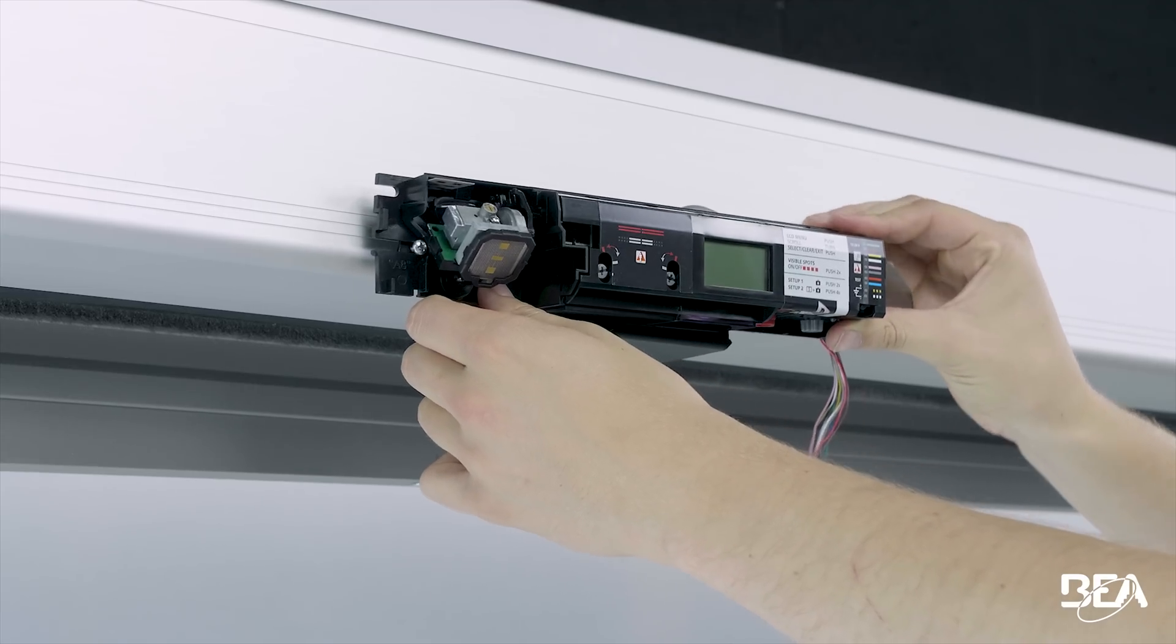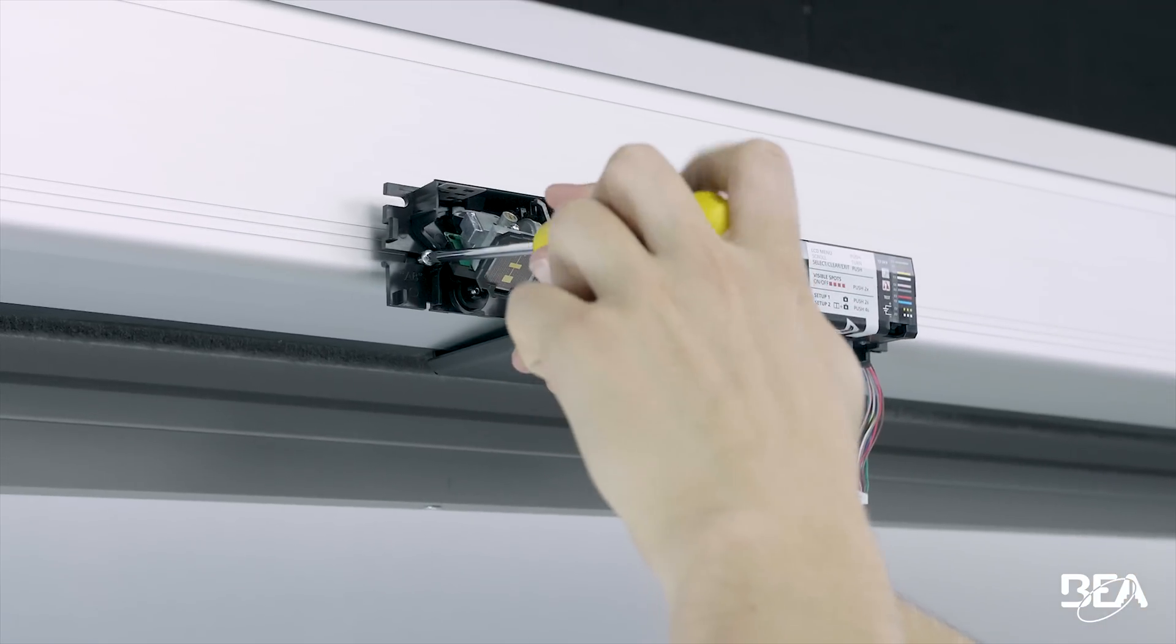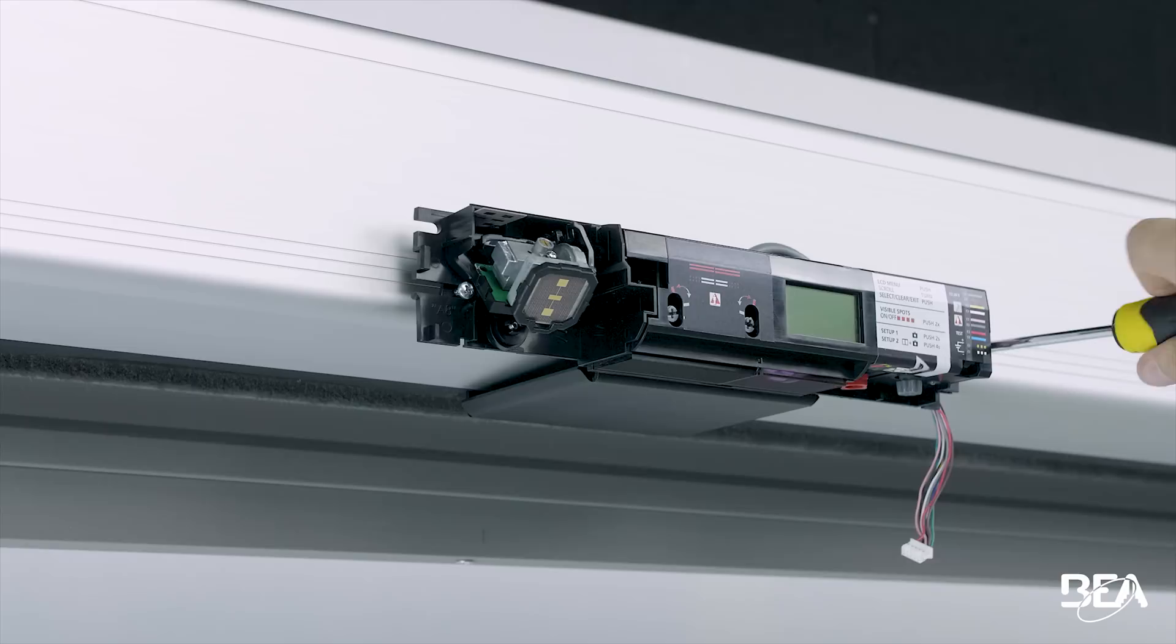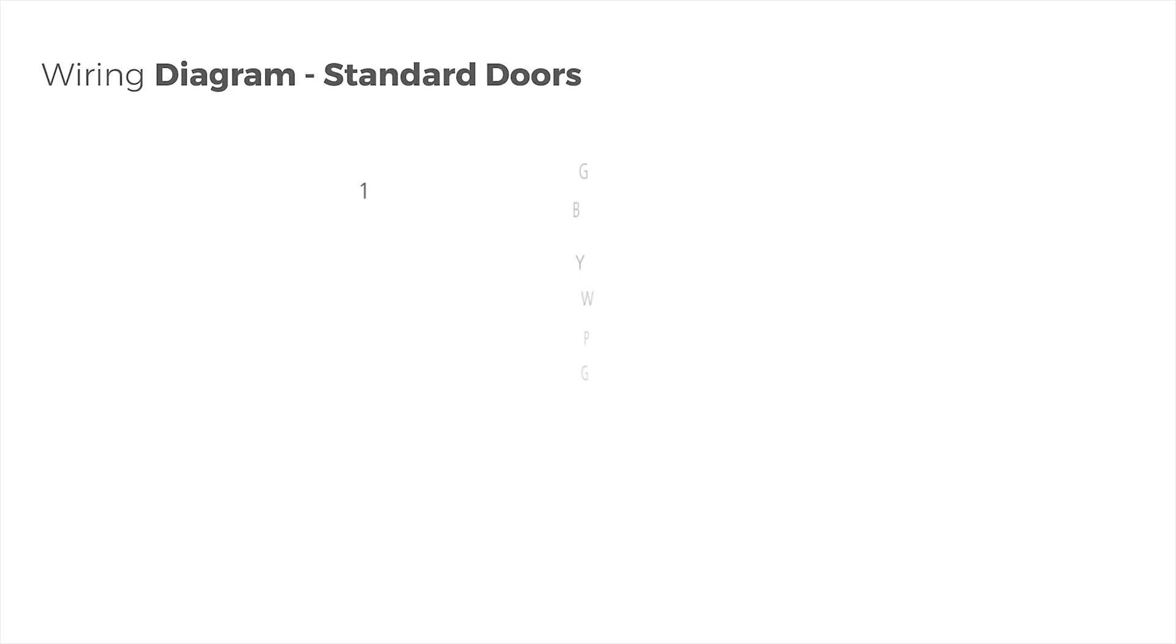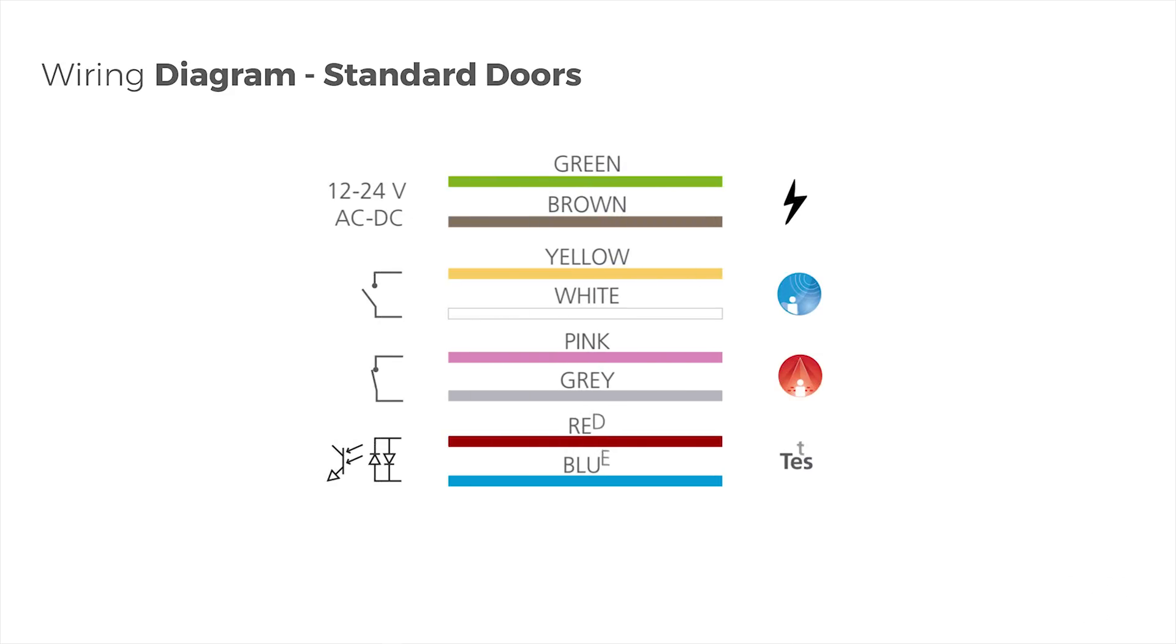Position the ICSI-OD base on the door and tighten the screws to fasten the sensor firmly onto the door frame. When installed on standard doors, please follow the wiring diagram.